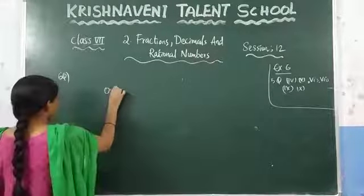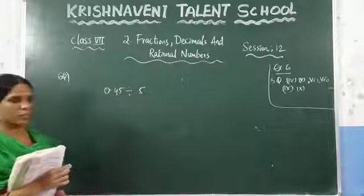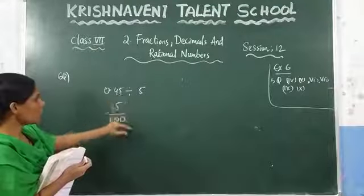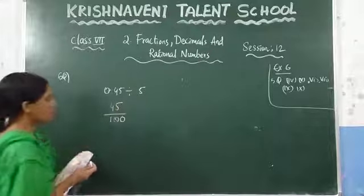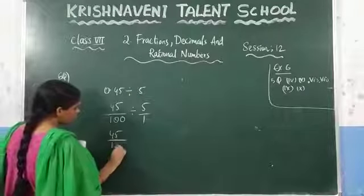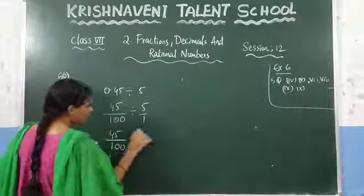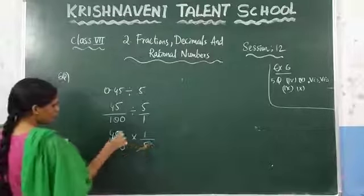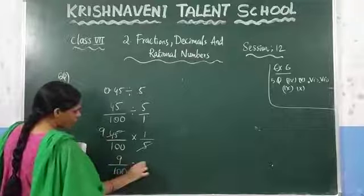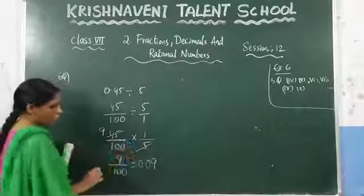In the second question: 0.45 divided by 5. Write 0.45 as 45 by 100, since after the decimal point there are two numbers, and write 5 as 5 by 1. Change division into multiplication, so reverse 5 by 1 to get 1 by 5. Here 5 cancels with 45 giving 9. So you get 9 by 100, which equals 0.09.